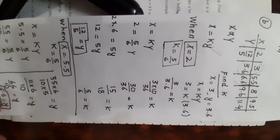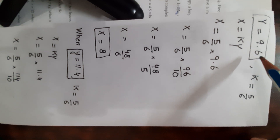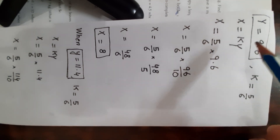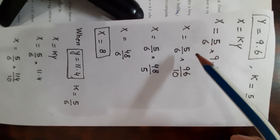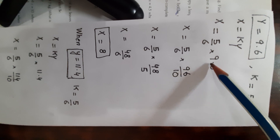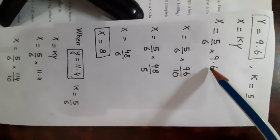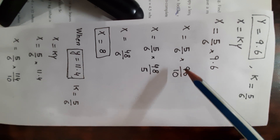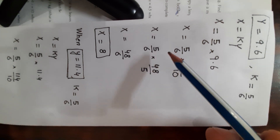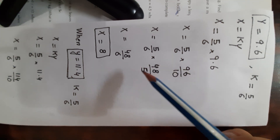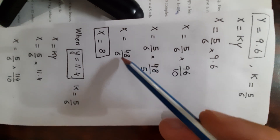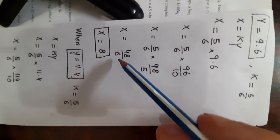When y is 9.6, find the value of x. With k equal to 5/6 and y equal to 9.6, write 9.6 as 96/10. Then x equals (5/6) times (96/10). After simplification — 5 and 5 cancel, giving 48/6 — and since 6 times 8 equals 48, x equals 8 when y is 9.6.